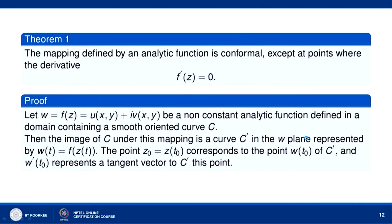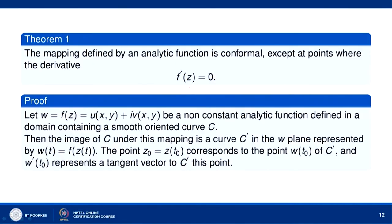Now consider the theorem: the mapping defined by an analytic function is conformal at all points except where the derivative is zero. This is a very important theorem — from it we can easily test conformality by finding the derivative. The points where the derivative vanishes are called the critical points of the mapping. Critical points also include points where the derivative does not exist.